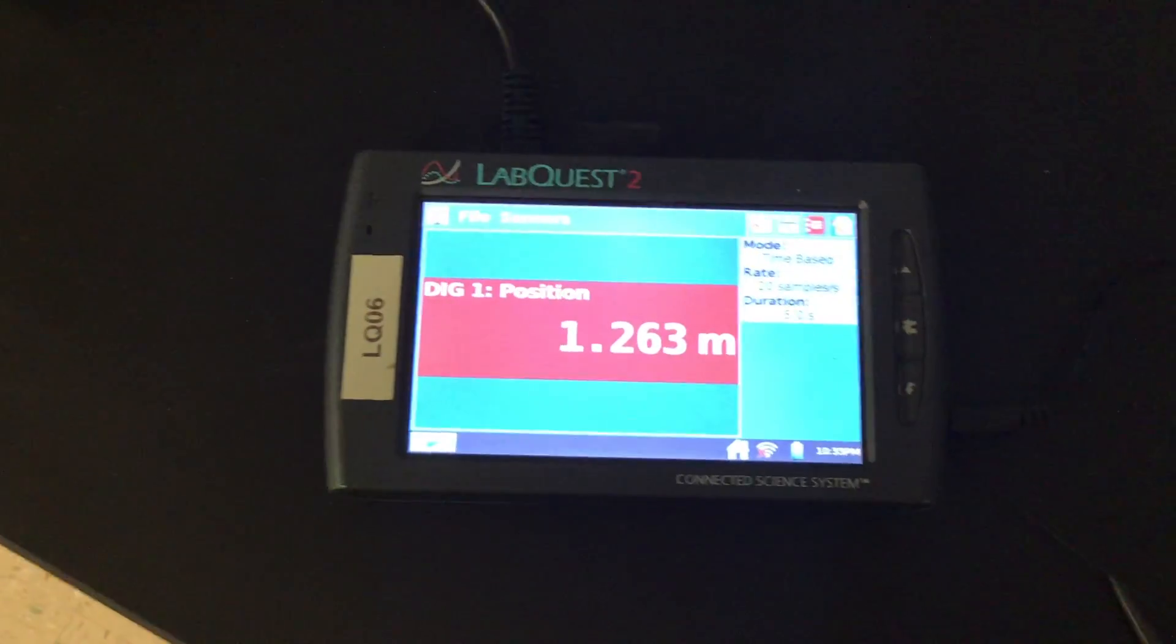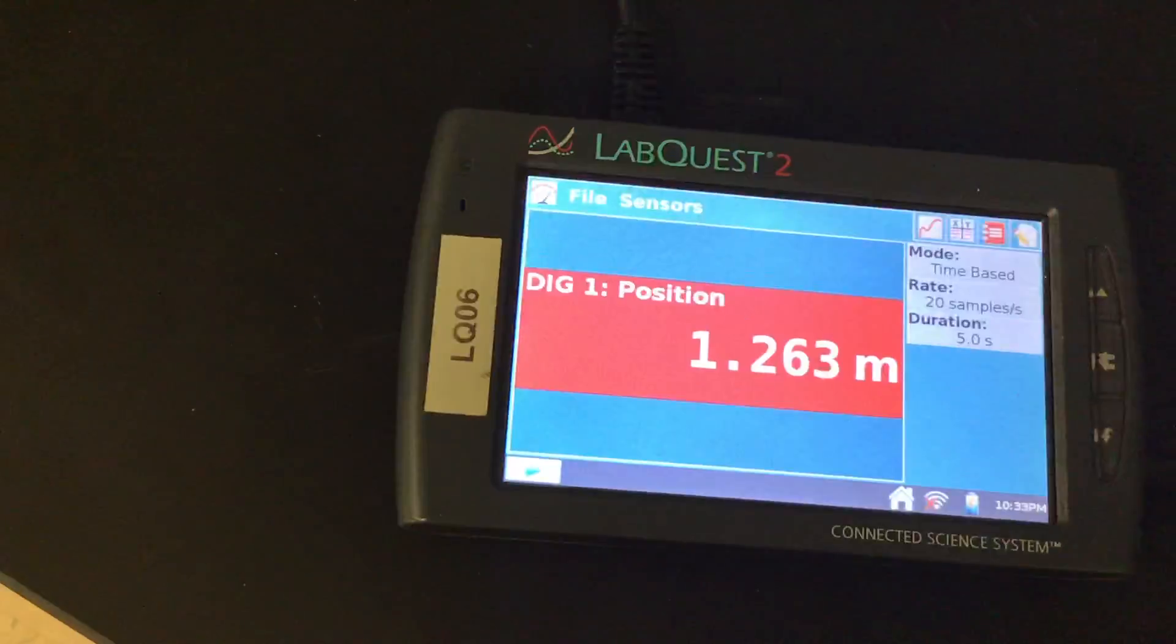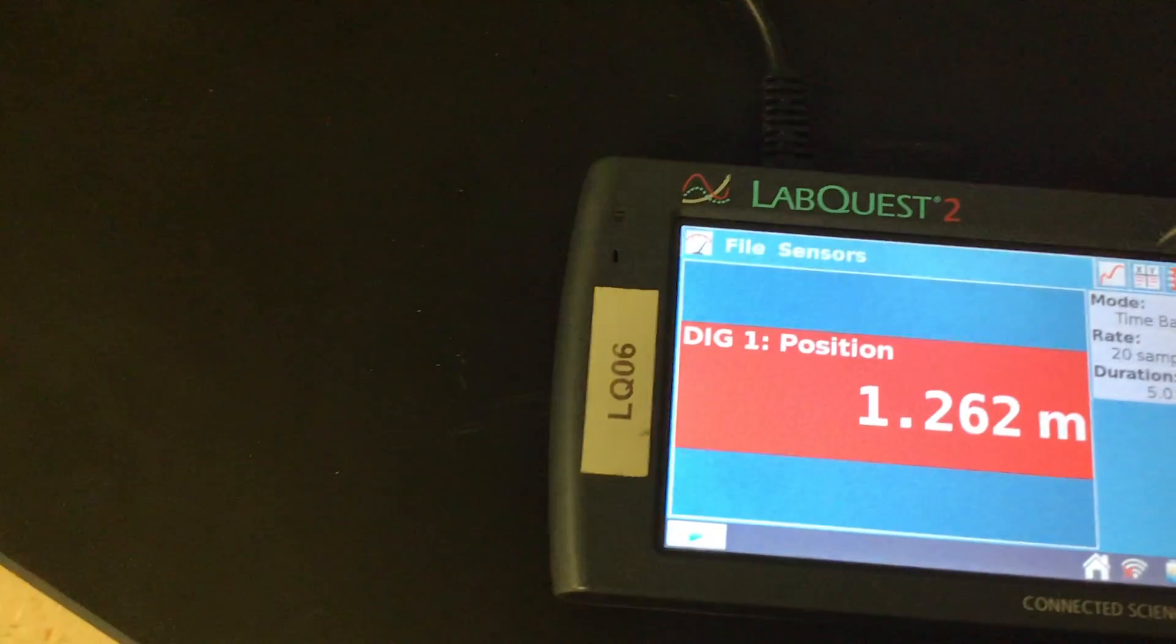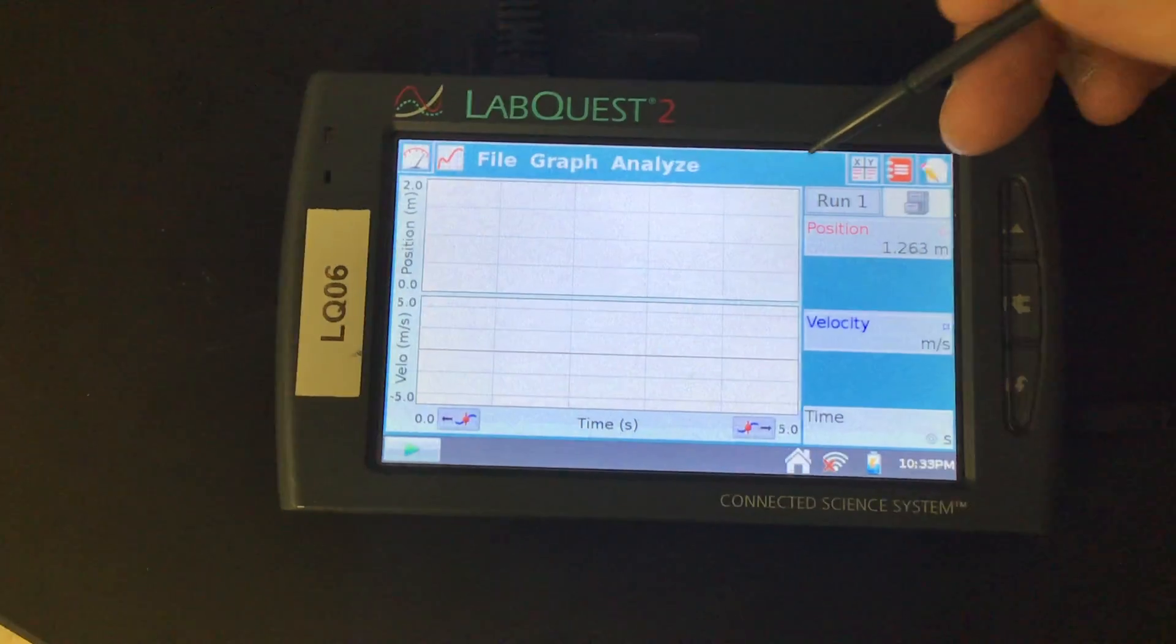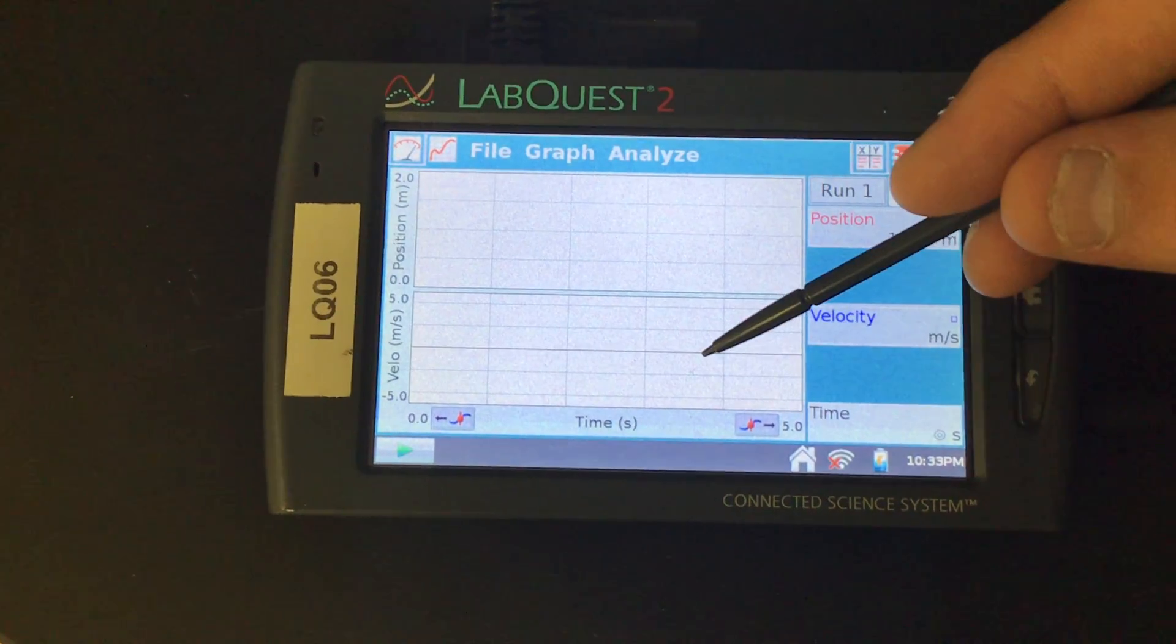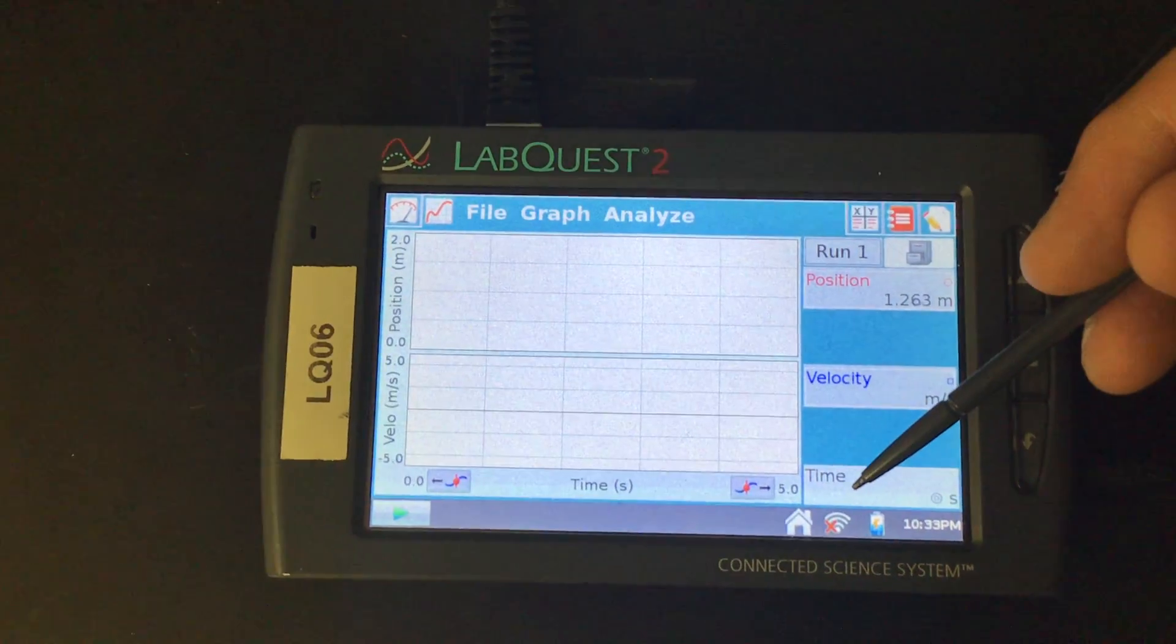Right now it's measuring the range downfield, and when we get rolling here we want to be able to start collecting data. So what I'm going to do is switch this view from the screen to my graphical one. What that does for me is it gives me a position graph here, it gives me a velocity graph here, and it's going to record red for position, blue for velocity over time.